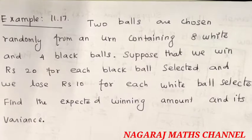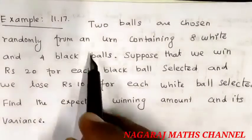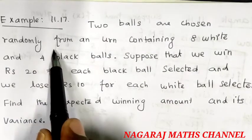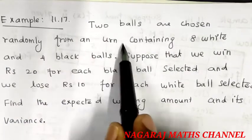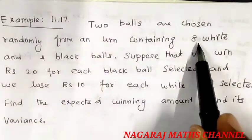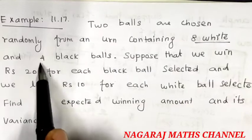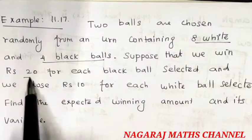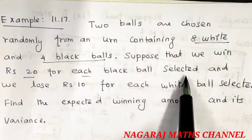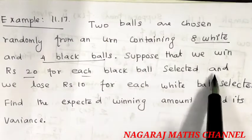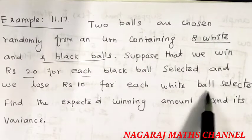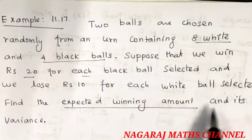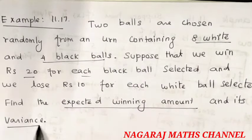Hi students, this is example 17. Two balls are chosen randomly from an urn containing 8 white balls and 4 black balls. Suppose that we win Rs.20 for each black ball selected and we lose Rs.10 for each white ball selected. Find the expected winning amount and its variance.